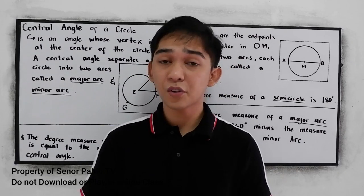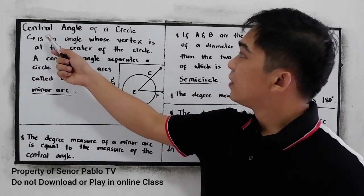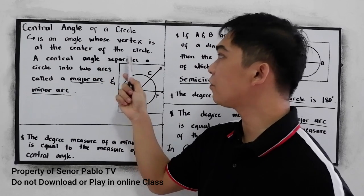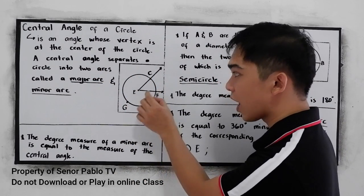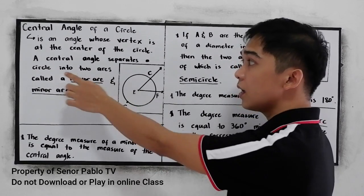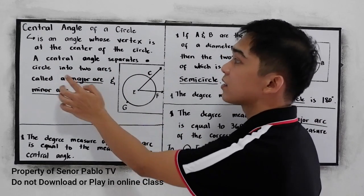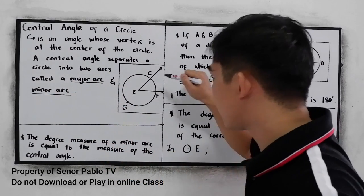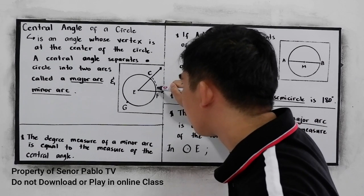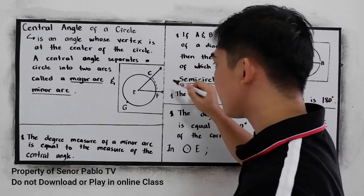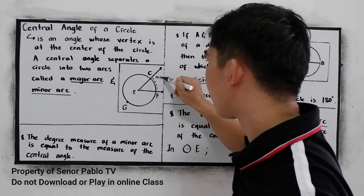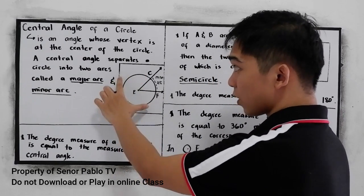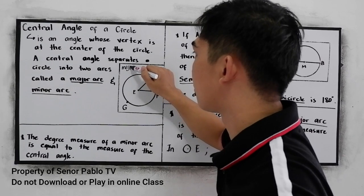So let us define what is a central angle of a circle. A central angle of a circle is an angle whose vertex is at the center of the circle. So if we have here a circle and we have a center at point E, a central angle separates a circle into two arcs called the major arc and the minor arc. So we have here the smaller arc — this is what we call the minor arc.